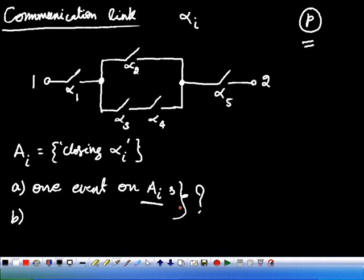Are they mutually exclusive? See, does the closing of the upper path exclude the closing of the lower path? No. Both the paths may be closed. They are not mutually exclusive. Why? Because the switches are independent here.